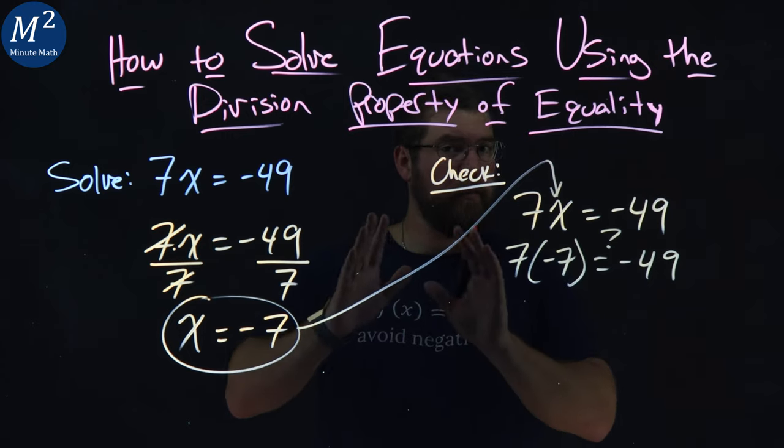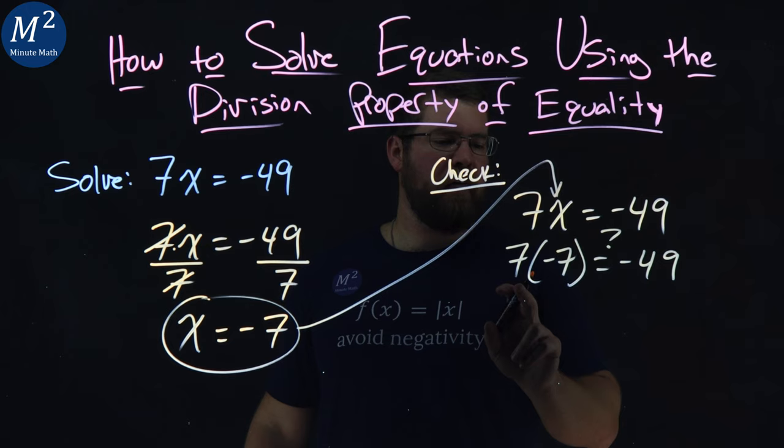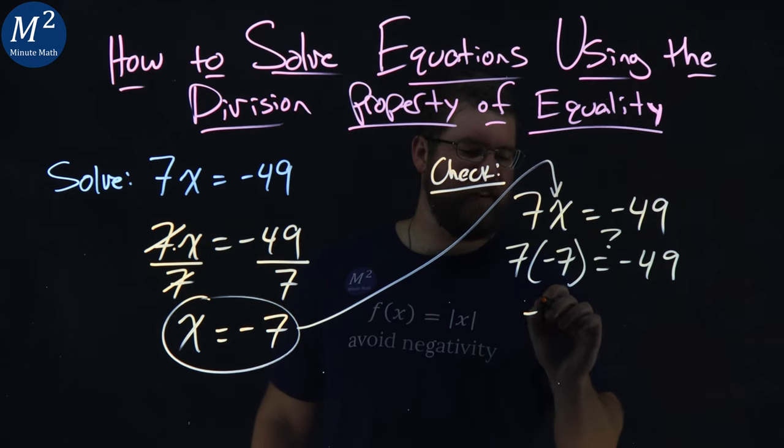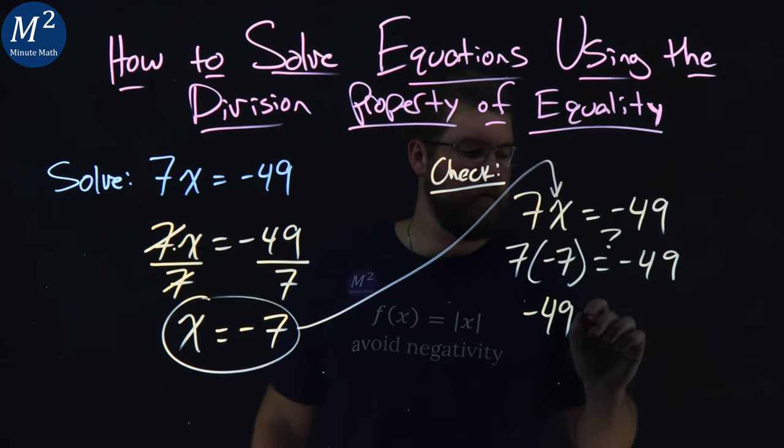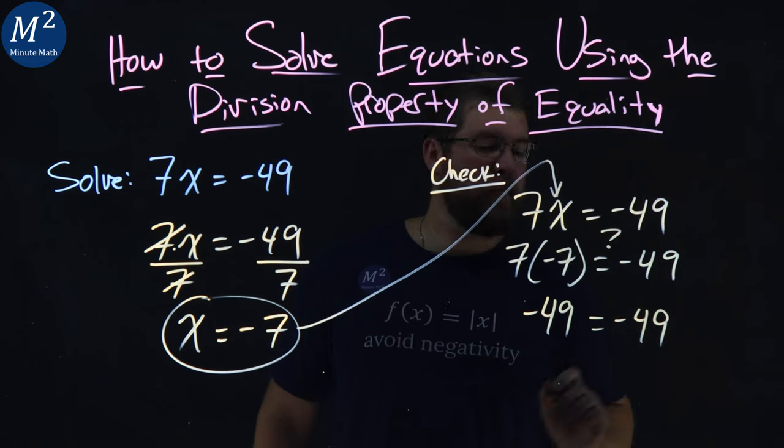Well, simplify both sides of the equation to see if it's equal. 7 times negative 7 is negative 49, as you could guess.